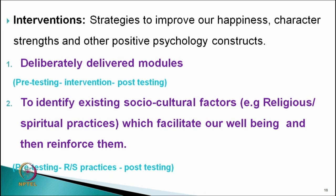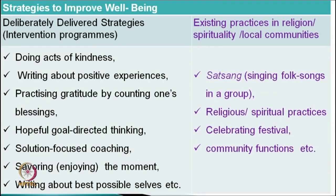The second group is to identify existing socio-cultural factors or religious-spiritual practices which facilitate our well-being and then reinforce them through intervention programs. For example, we can identify some religious-spiritual practices and study their effectiveness through pre- and post-testing. So these are two ways to have certain programs. First, strategies identified by positive psychologists as well-being enhancing strategies — deliberately delivered strategies or intervention programs. Second, existing practices in religion, spirituality, or in local communities.